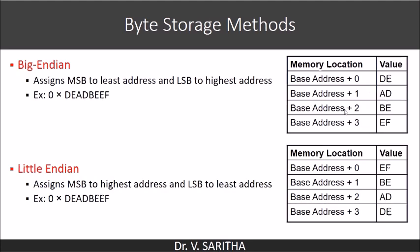Then the base address is incremented to store AD. Base address plus 2 stores BE. Base address plus 3 holds EF. This is the big endian storage method. In the case of little endian, the MSB is assigned to the highest address and the LSB to the least address.